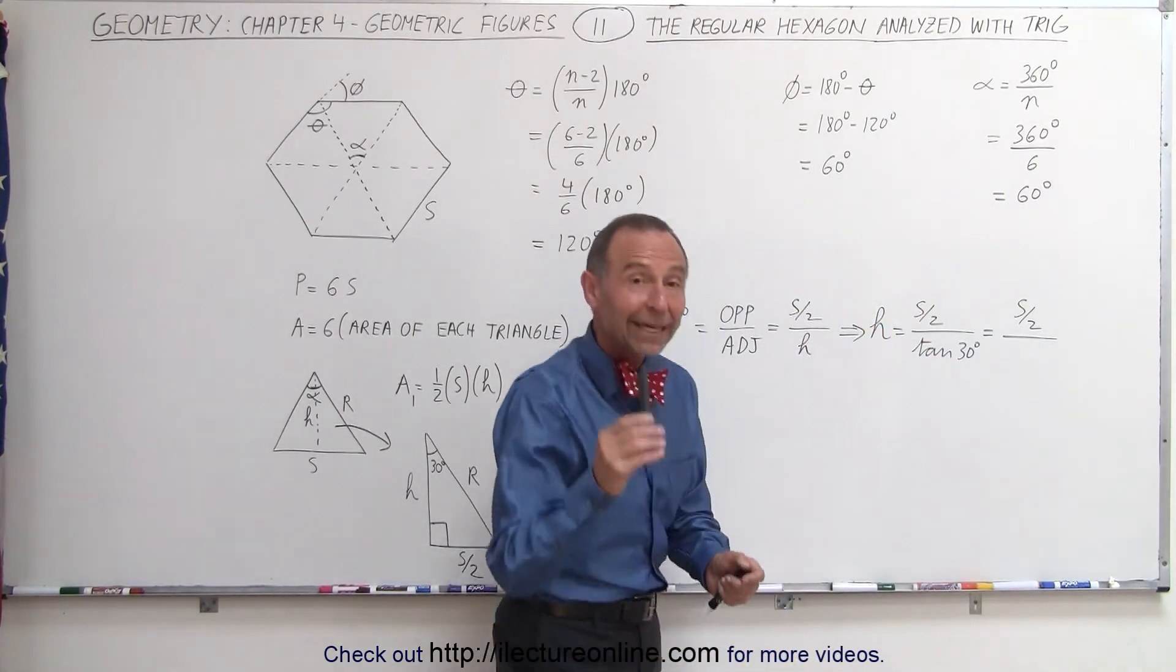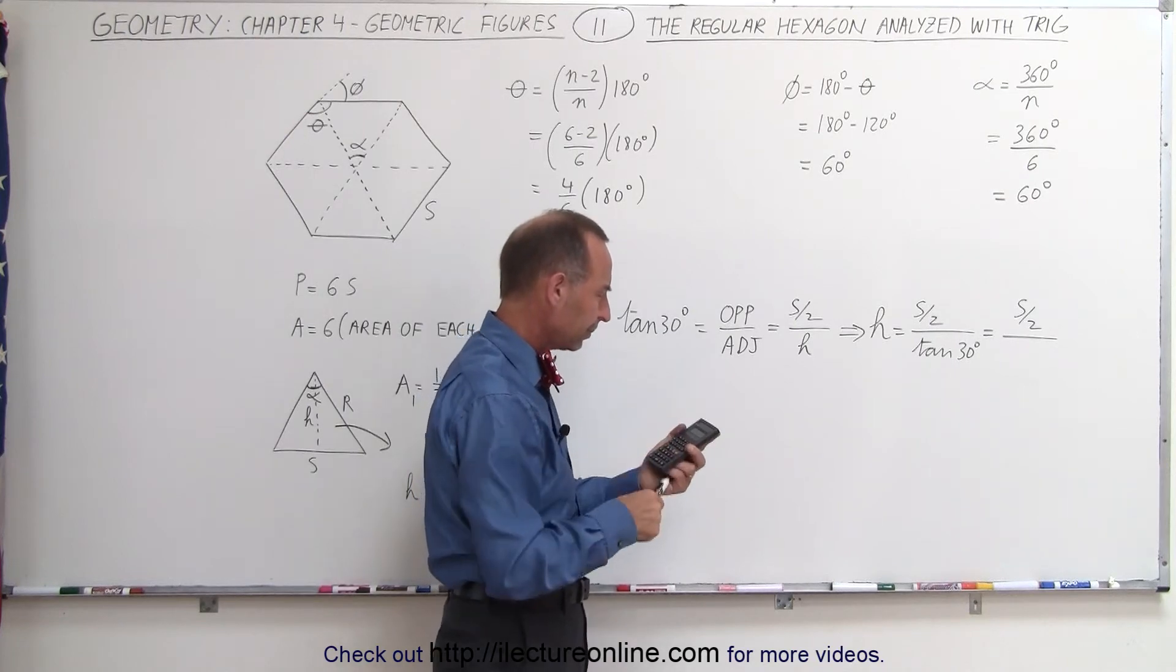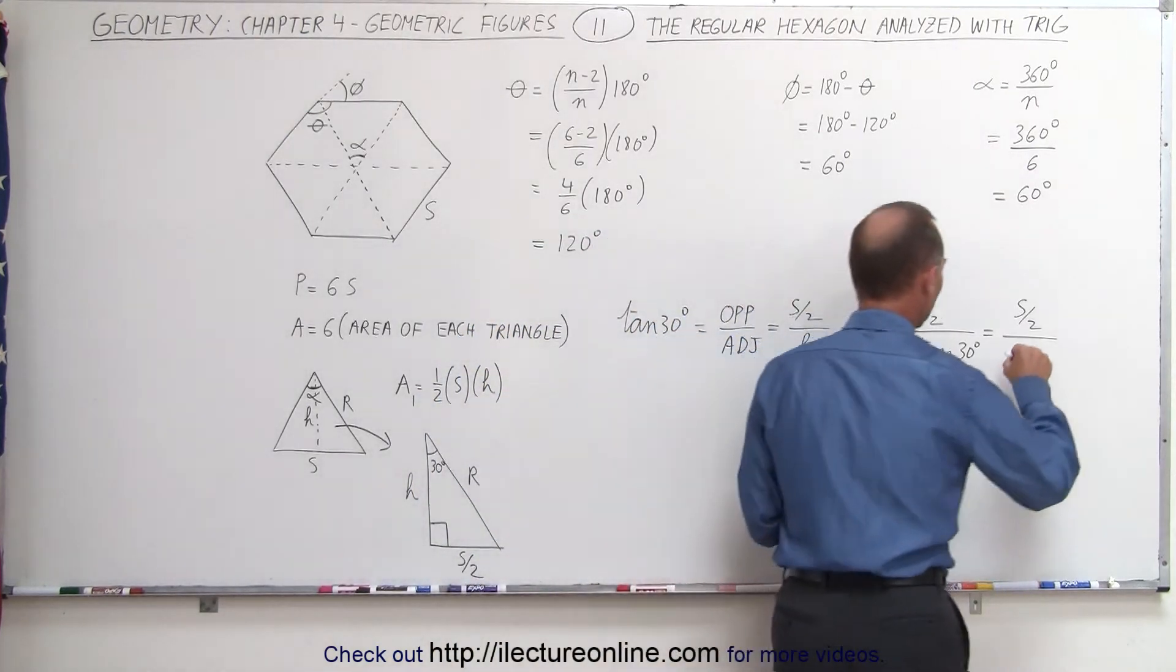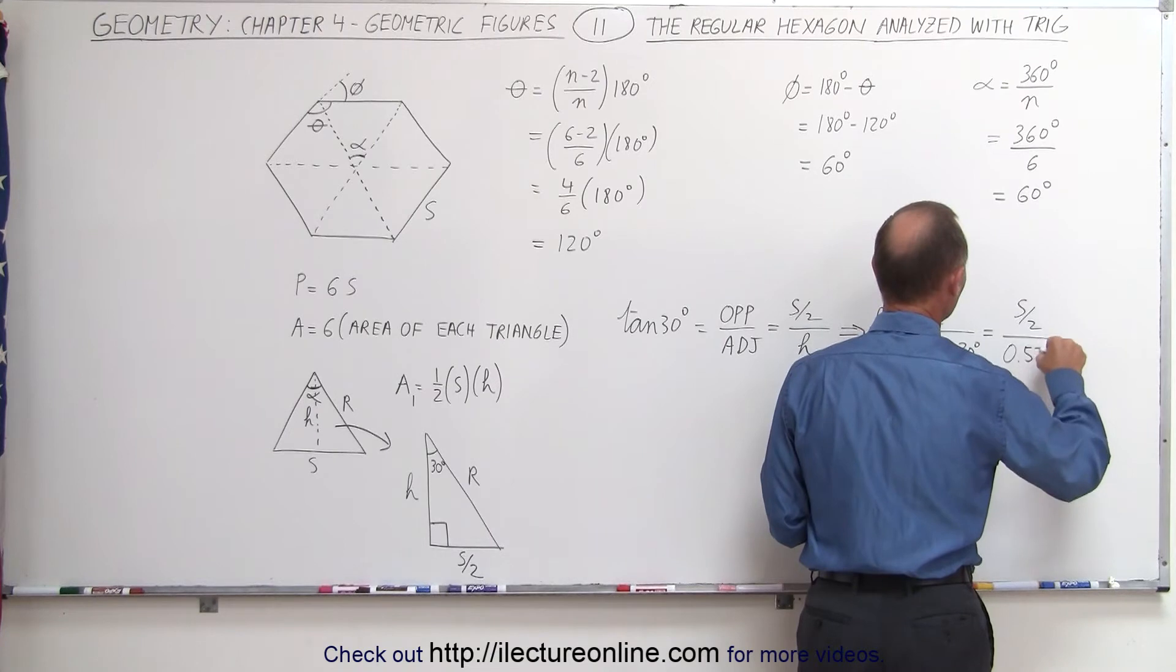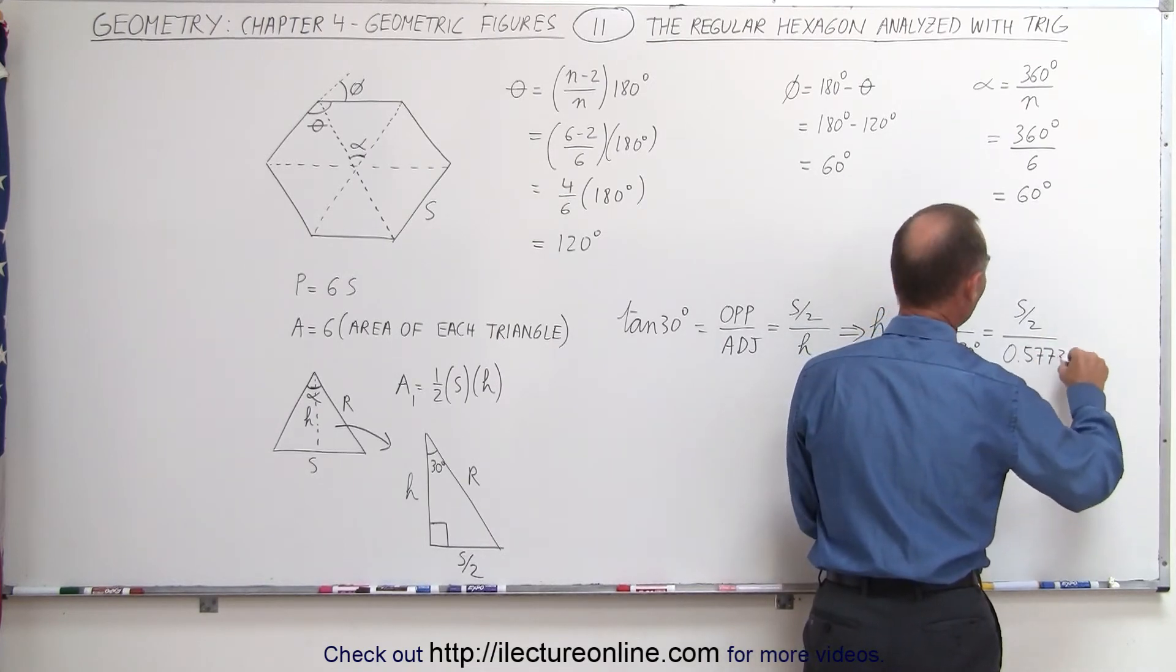Now we grab a calculator and find the tangent of 30 degrees, which equals 0.57735.